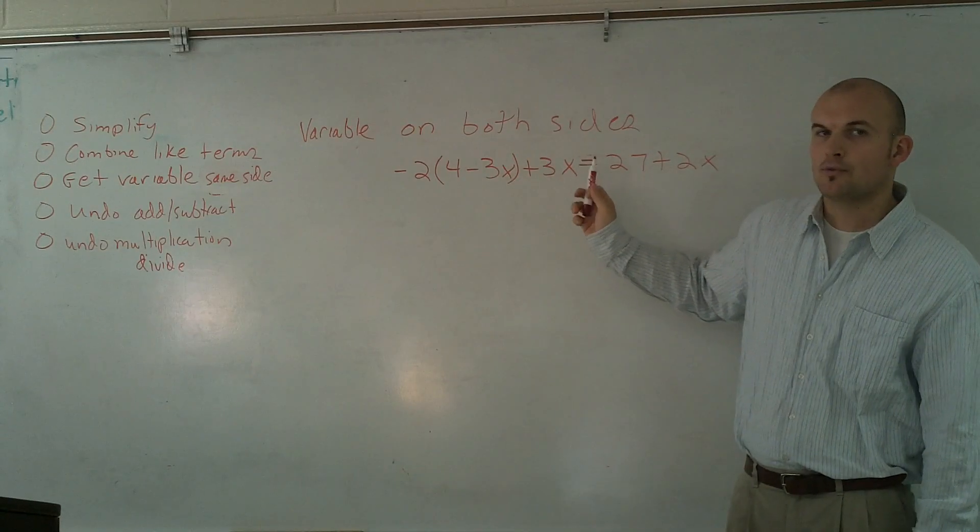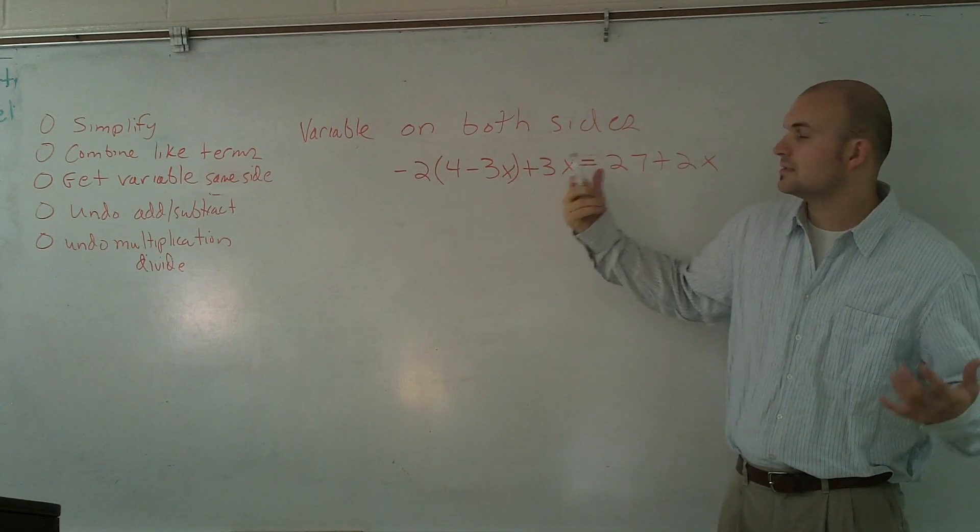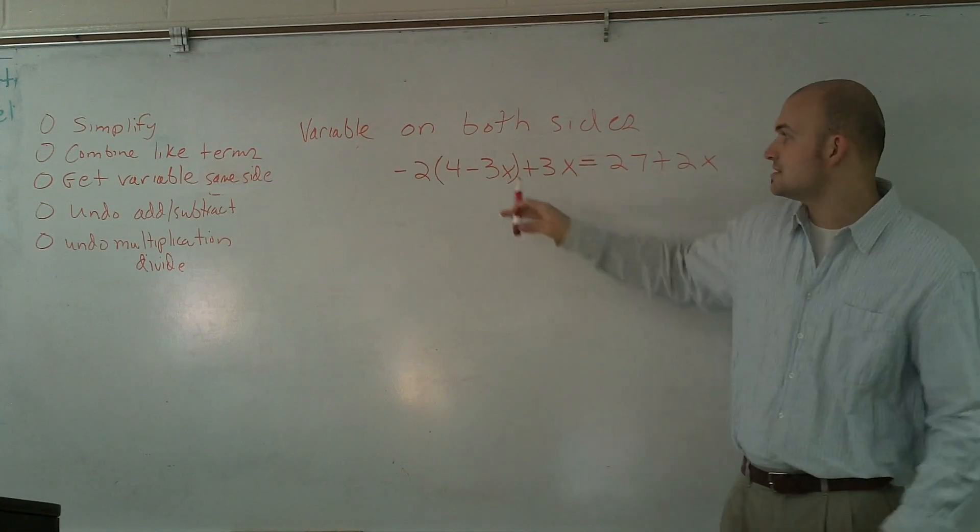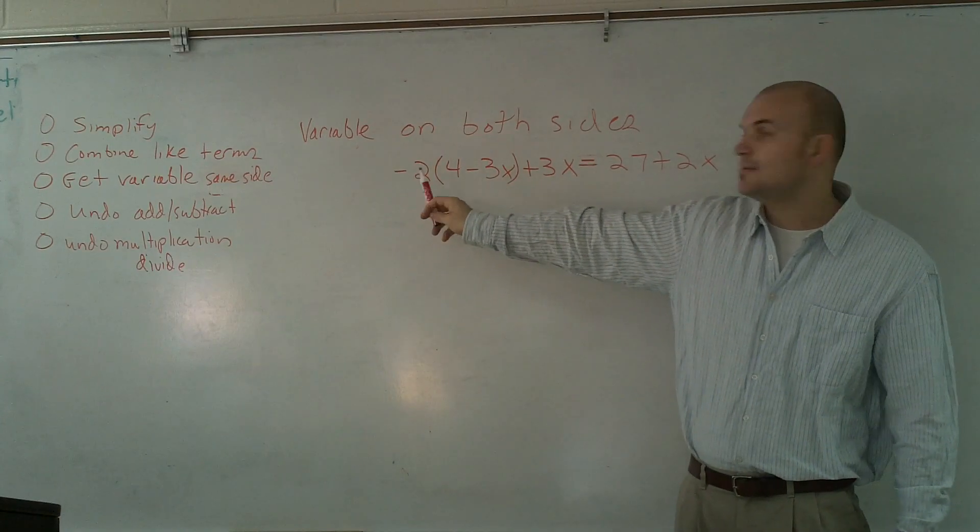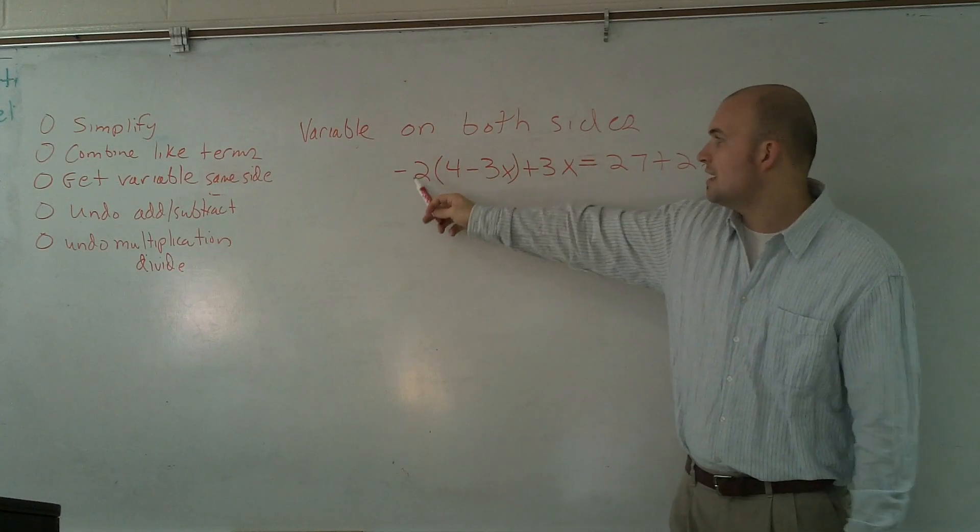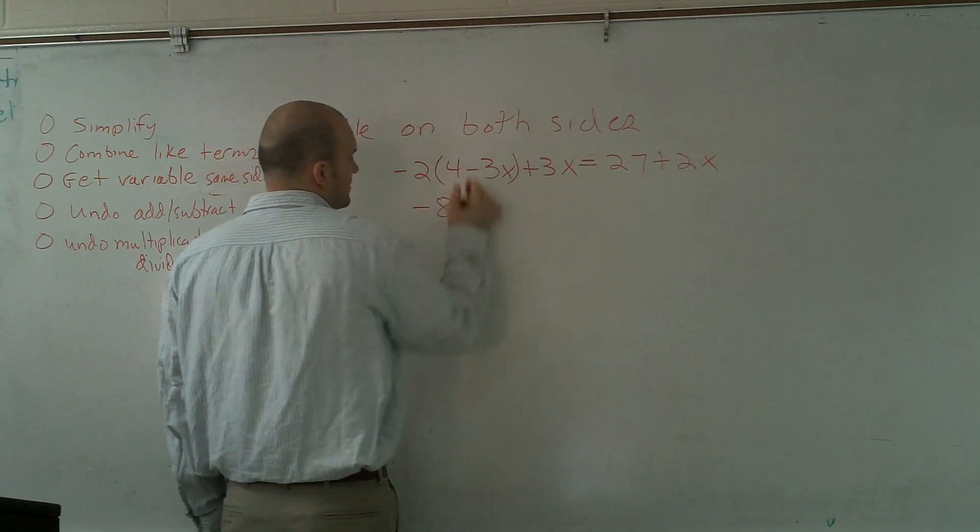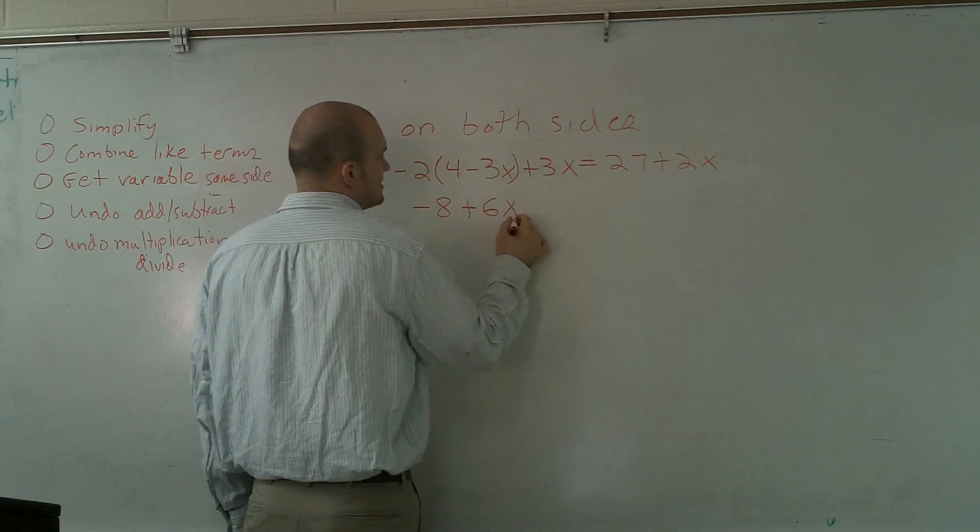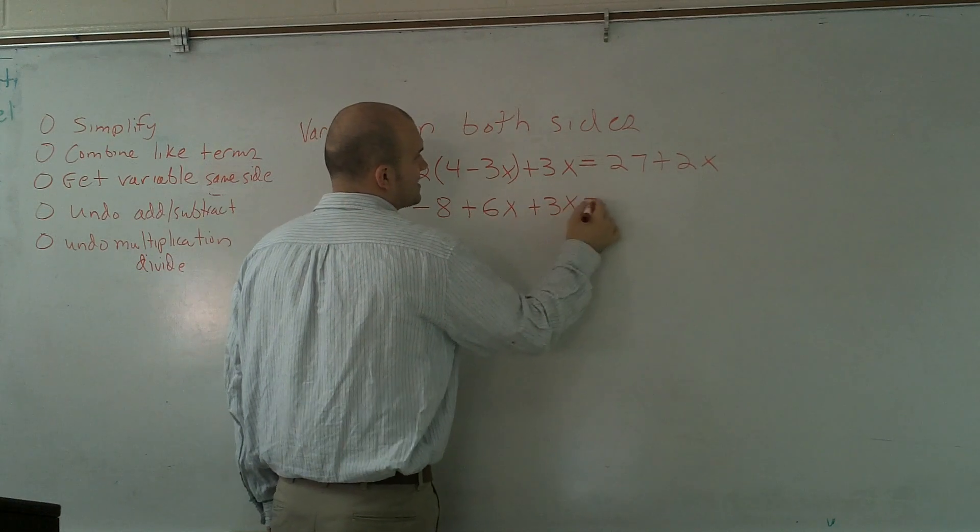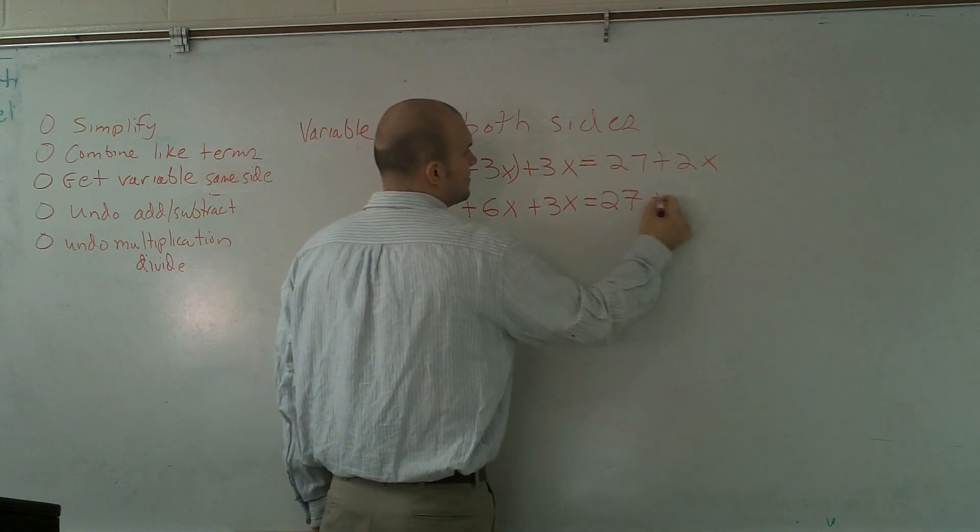There's no other multiplication, division, parentheses, or exponents that I can use in my order of operations. So, I'm going to multiply my negative 2 times 4, my negative 2 times the negative 3x. I get negative 8 plus 6x plus 3x equals 27 plus 2x.